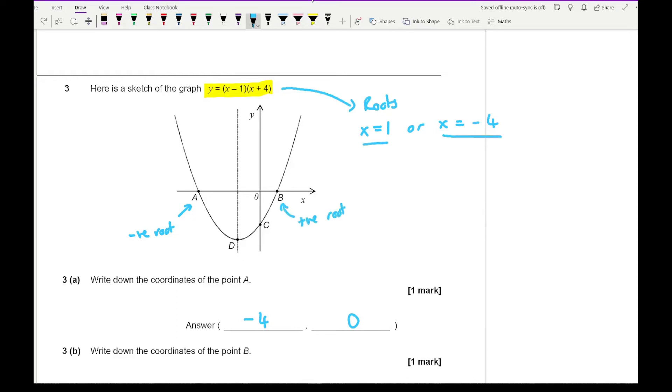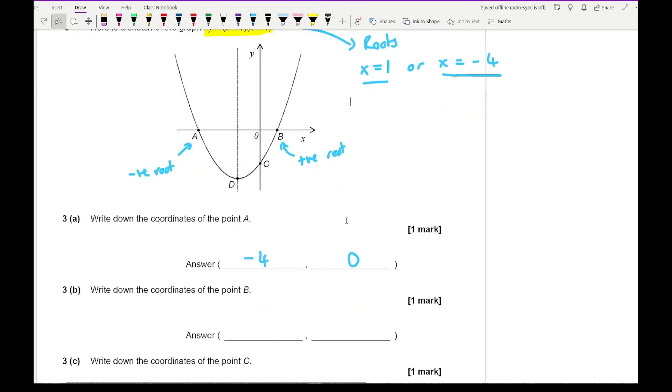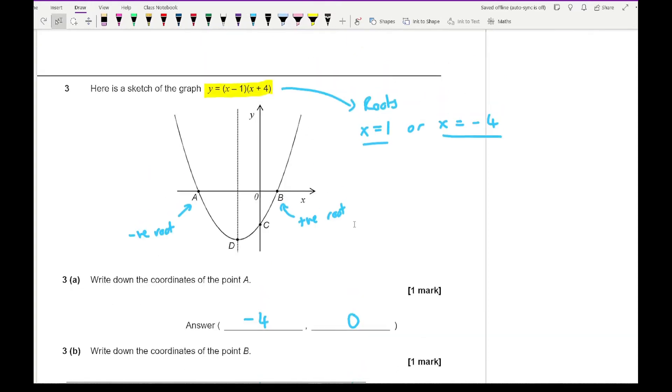Now for c this is the y-intercept. To find the y-intercept when we've got a factorized equation all we need to do is just expand the brackets. So I've got y equals x squared plus 4x minus 1x minus 4. So that gives me y equals x squared plus 3x minus 4. Now the y-intercept is going to be the constant at the end or when x equals 0 in which it's going to be minus 4. So here that's going to be at minus 4. So the coordinate of that for c is going to be 0, minus 4.